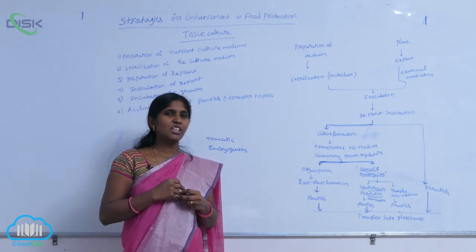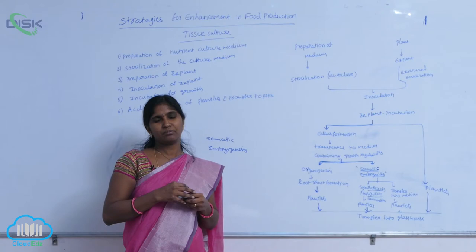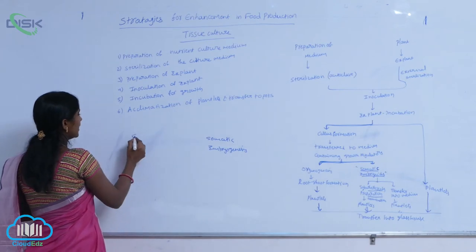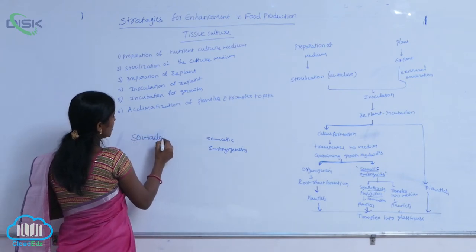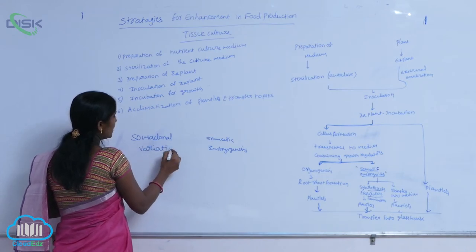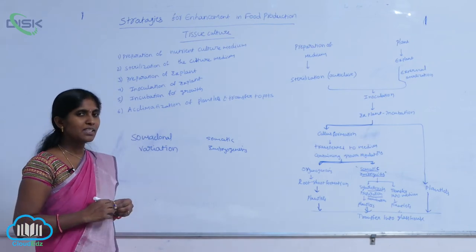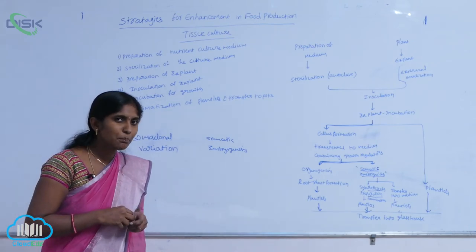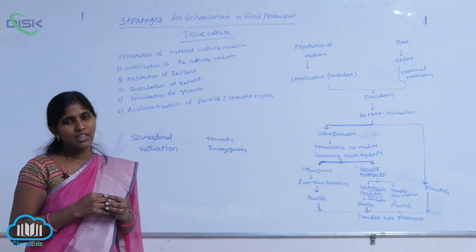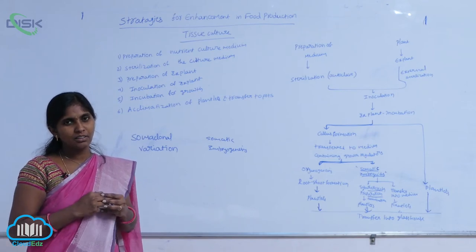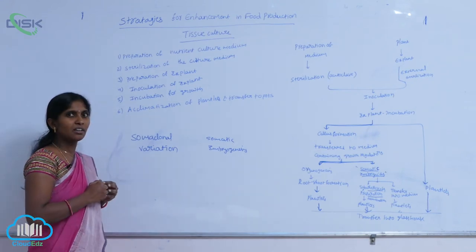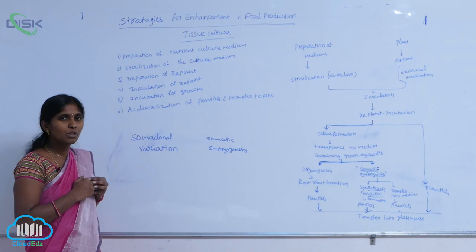Soma clones are genetically identical plants generated by in vitro cultivation, but sometimes they show variations among them. These variations are referred to as soma clonal variations.